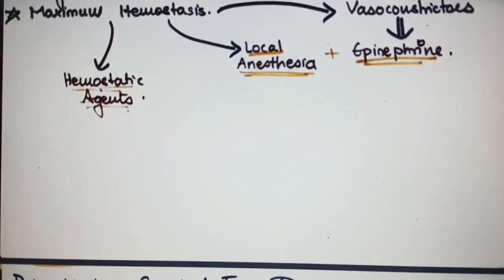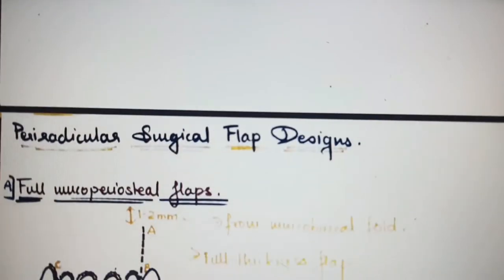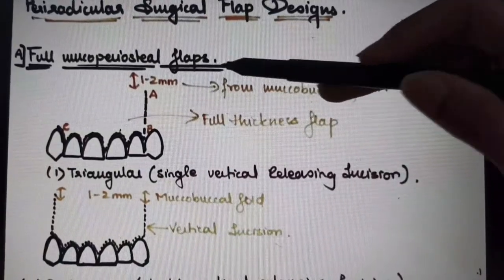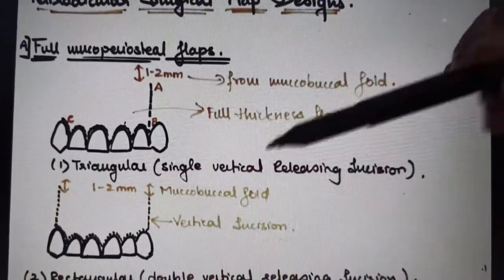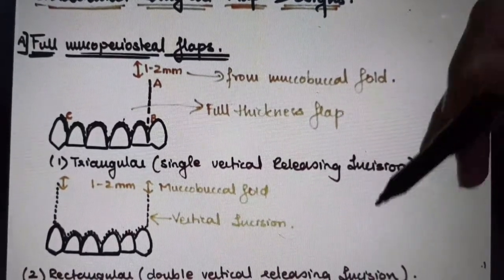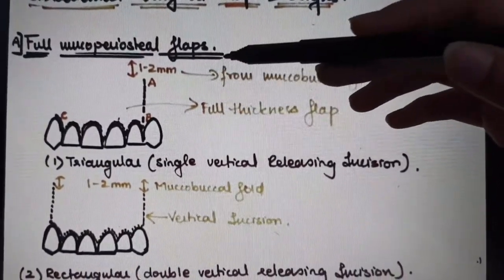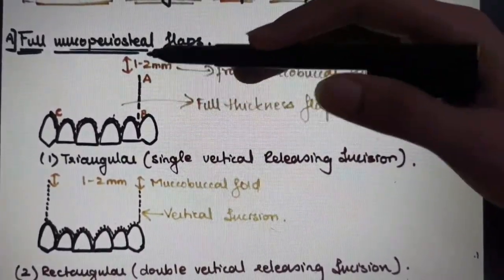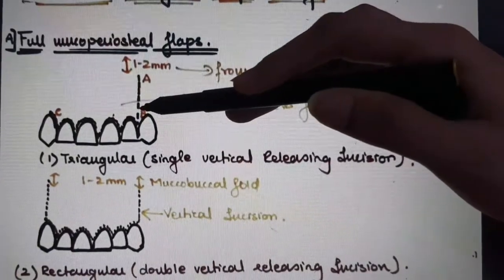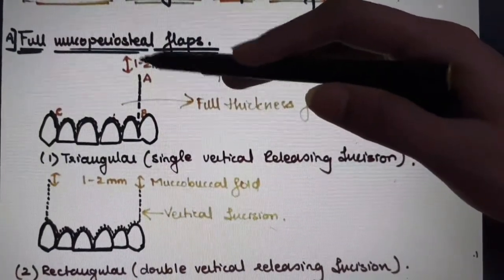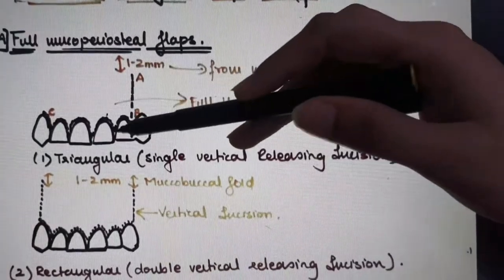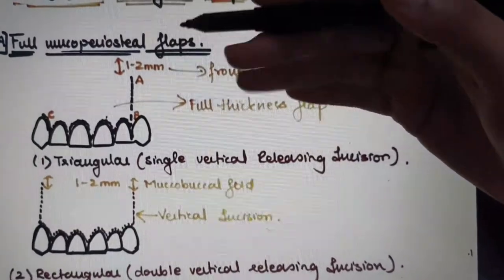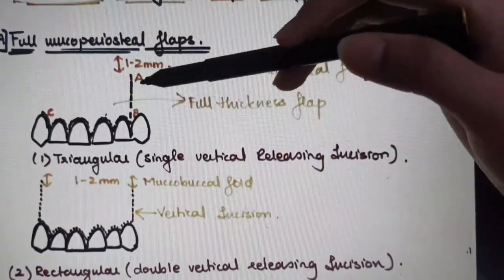After local anesthesia, we mark the outline of the incision and incise with BP blades, then design the flap. In flap designs we have full mucoperiosteal flaps and limited mucoperiosteal flaps. First is the triangular flap with a single vertical releasing incision 1-2mm below the mucobuccal fold, crevicular incision is given, and we reflect this full thickness flap.